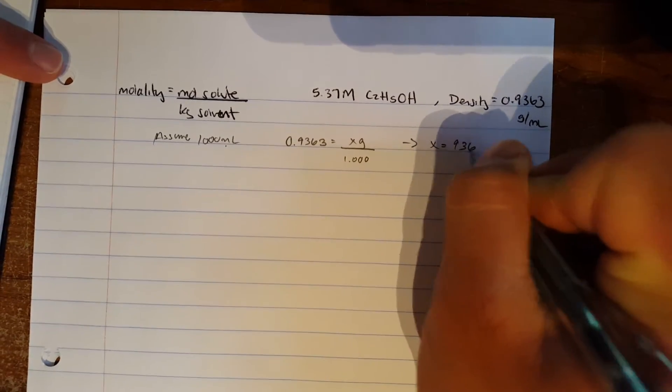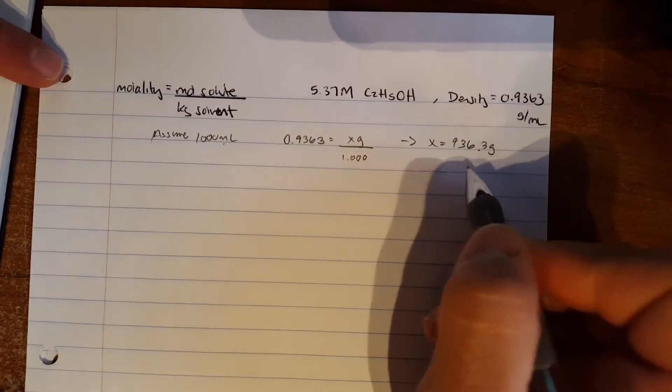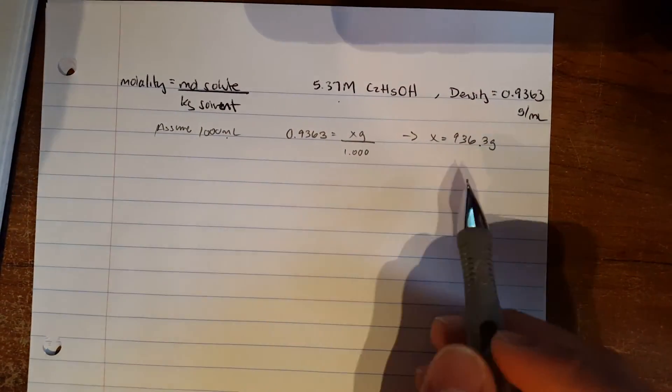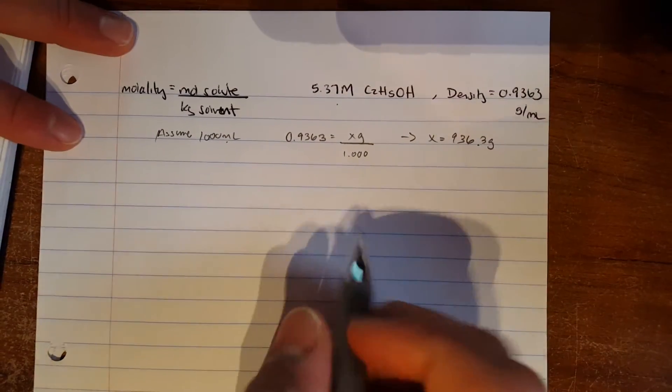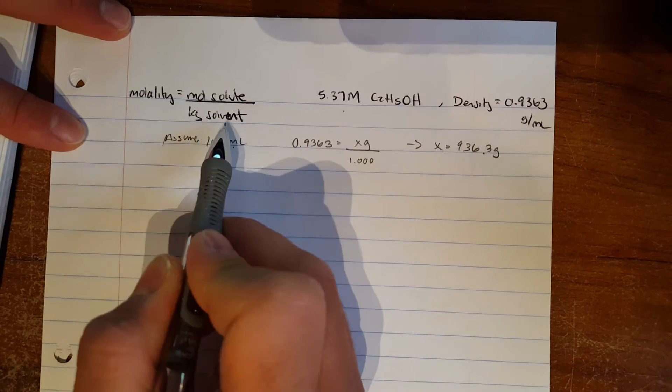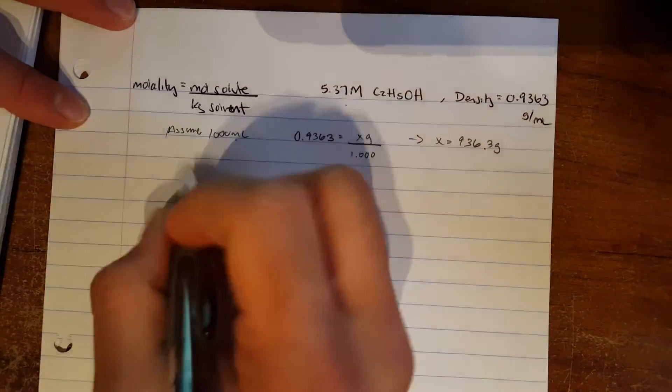Now we're given the molarity and it's asking us for the molality. Molality is moles of solute over mass of solvent, so we have to find the mass of the solvent, which in this case is water.